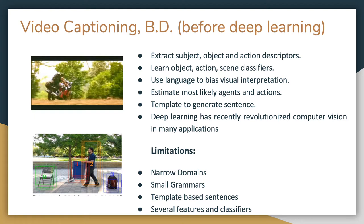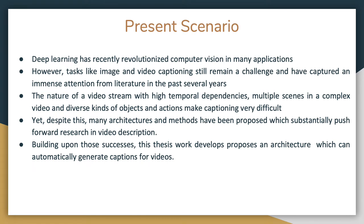There are few limitations to using video captioning with deep learning as well. Since the introduction of deep learning, the computer vision field has revolutionized a lot; however, tasks like image and video captioning still remain a challenge and have captured immense attention from the literature in the past several years. The nature of a video stream — with high temporal dependencies, multiple scenes, and diverse kinds of objects and actions — makes captioning very tough. Yet despite these factors, many architectures and methods have been proposed, substantially pushing forward research in video description. Building upon those successes, this thesis proposes an architecture which can automatically generate captions for videos.